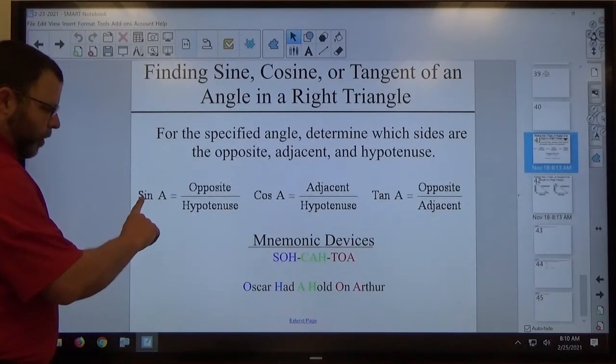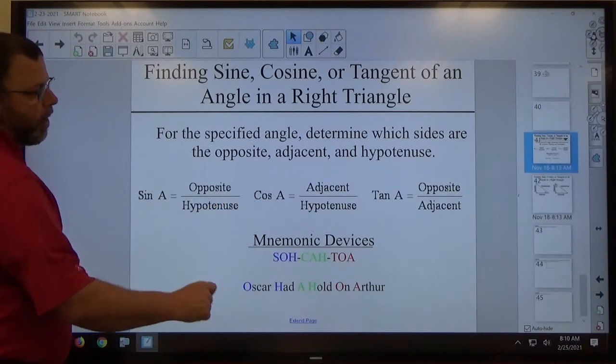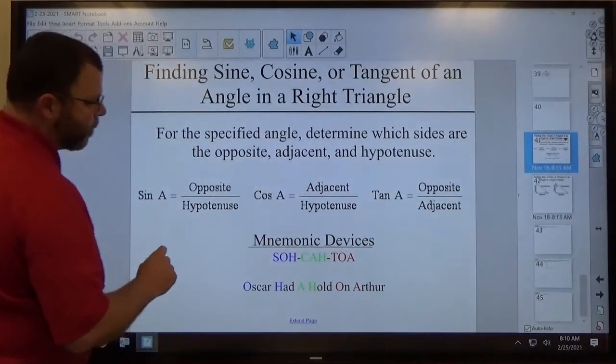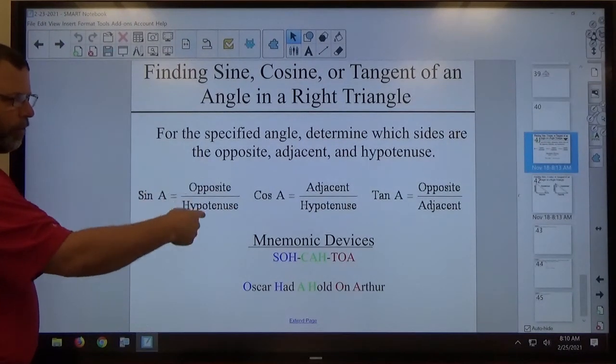And you typically write a trig ratio: sine is abbreviated sin, cosine abbreviated cos, and tangent abbreviated tan, of an angle, and then it equals some ratio of two sides.